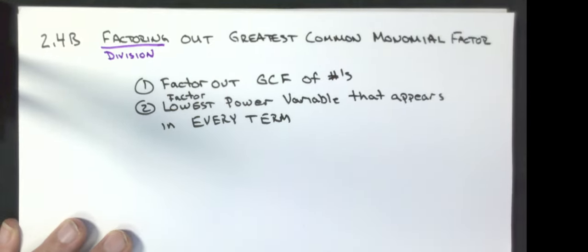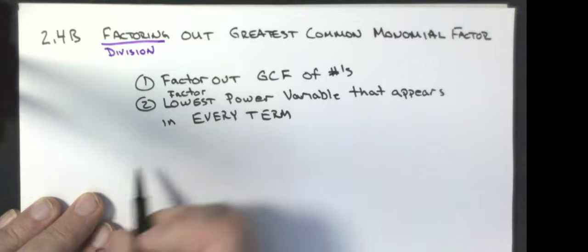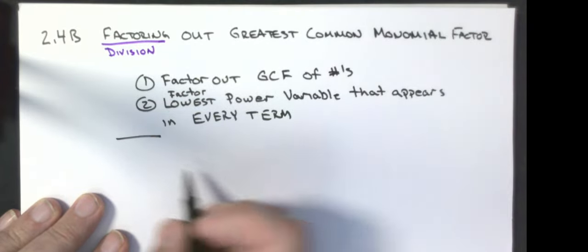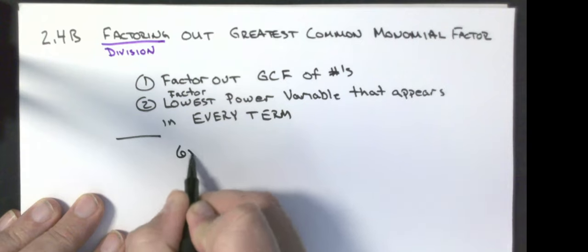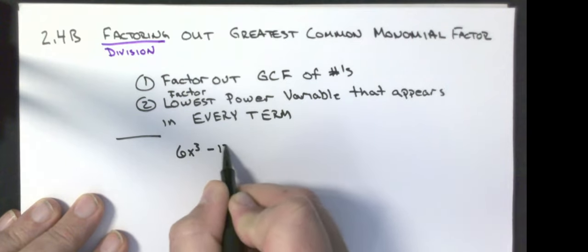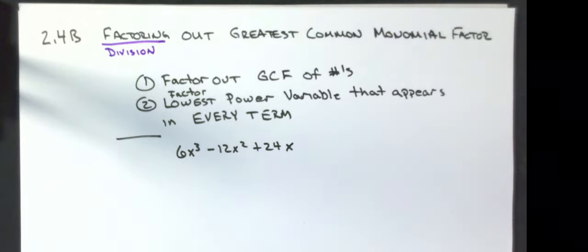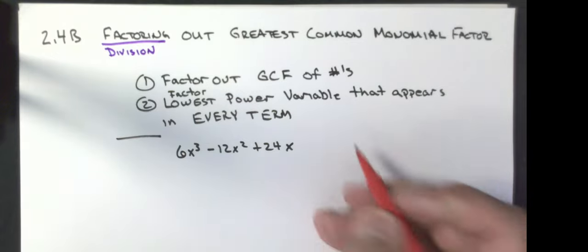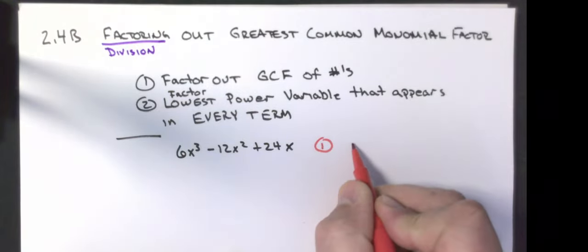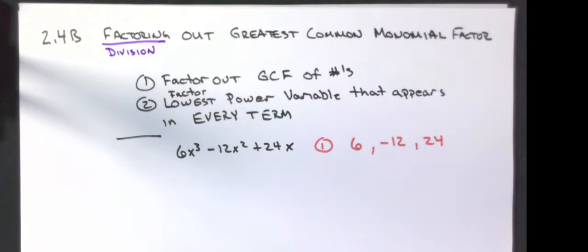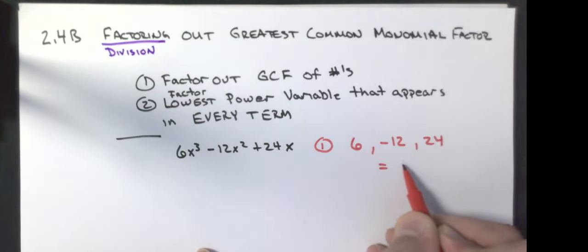The best way to show you this is with an example. I want to factor out the greatest common monomial factor of 6x cubed minus 12x squared plus 24x. The first step is to find the greatest common factor between 6, negative 12, and 24. The biggest number that goes into all three of those is 6.